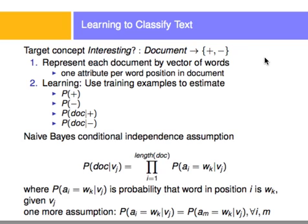Then we're going to learn. We're going to have training examples. Somebody has to grab a lot of, say, movie reviews and classify them and tag them as positive or negative. Or someone has to grab a lot of text similar to what we want to classify later on, and tag it as one class or another. The second step is learning — we're going to use these training examples to determine the probability of the positive outcome, the probability of the negative outcome, and the probability of each word in each document with positive or negative.